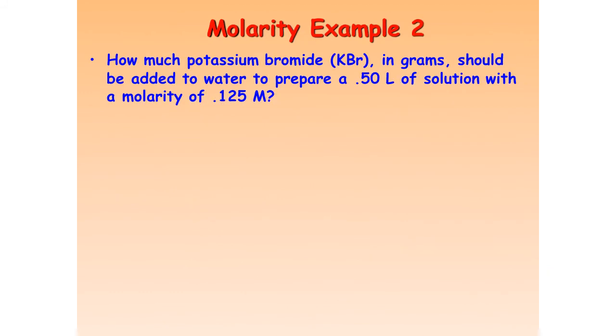All right, looking at another molarity example, this one is asking us for the amount of potassium bromide in grams that should be added to prepare a half-liter solution that has a concentration of 1.25 molar. So this one we're asked to solve for something a little different. So again, there's our molarity calculation. We know that our molarity is 1.25, and that is equal to our moles, which we don't know, so that's our x value.